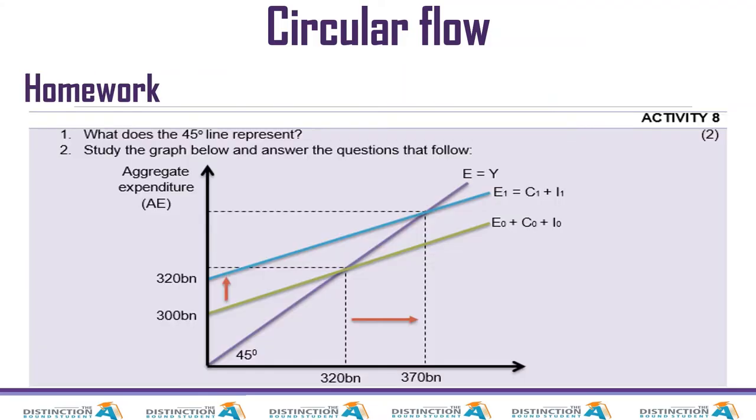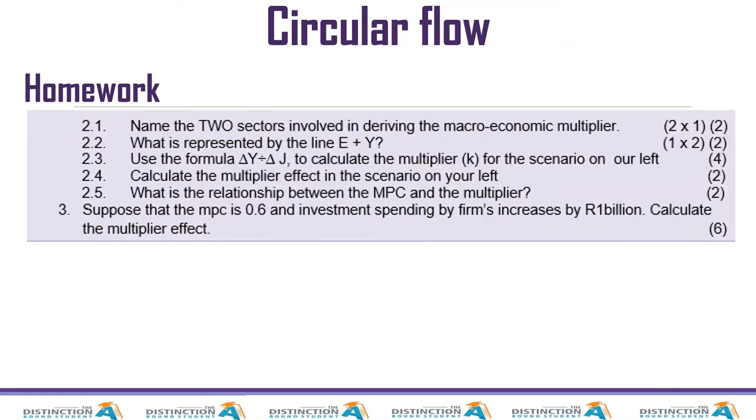So now I'm going to give you homework. What does the 45 degree line represent? Study the graph below and answer the questions that follow. Okay, there we go. So we have different figures and yes, calculate. Then name the two sectors involved in deriving the macroeconomic multiplier. What is represented by the line E plus Y? And so on. Use this formula: change in J is equal to change in Y divided by change in injection to calculate the multiplier for the scenario on our left.